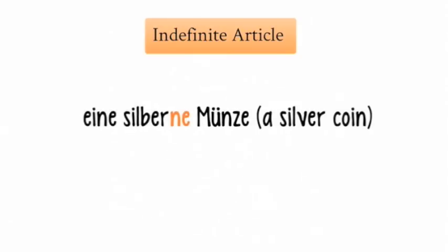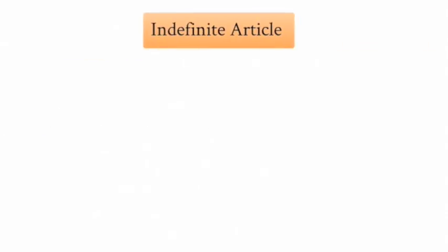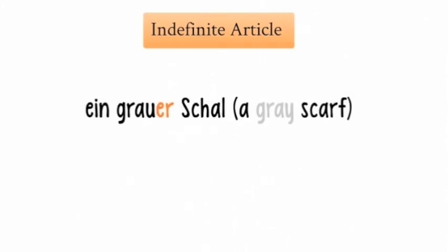The next one is Eine silberne Münze, meaning 'a silver coin.' The color adjective silber changes to silberne, and Münze is feminine — Die Münze. Then Ein grauer Schal, meaning 'a gray scarf.' The adjective grau changes to grauer, and Schal is masculine — Der Schal. So a gray scarf is Ein grauer Schal.